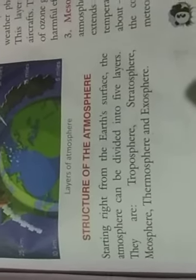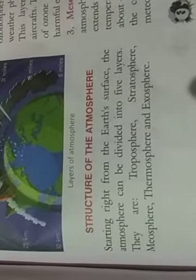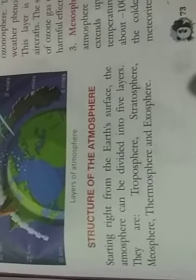First is Troposphere. I also want to remind you that before this chapter, I told you about the greenhouse effect and global warming, which is very important. Structure of Atmosphere: starting from the Earth's surface, the atmosphere can be divided into 5 layers — Troposphere, Stratosphere, Mesosphere, Thermosphere, and the Exosphere.